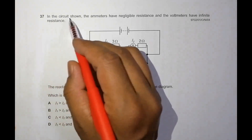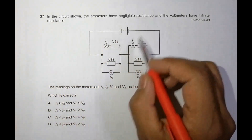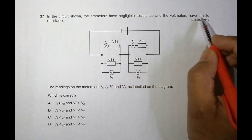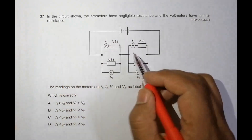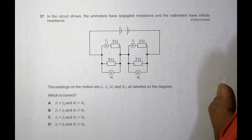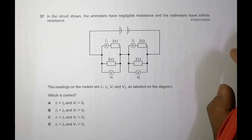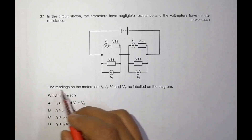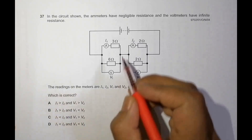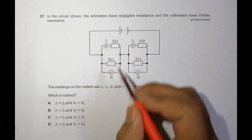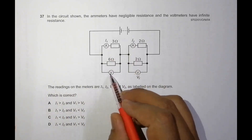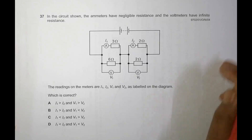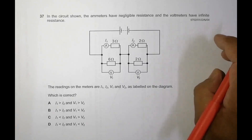In the circuit shown, the ammeters have negligible resistance and voltmeters have infinite resistance, which means both of them are ideal devices. The readings on the meters are I1, I2, V1, and V2 as labelled on the diagram.